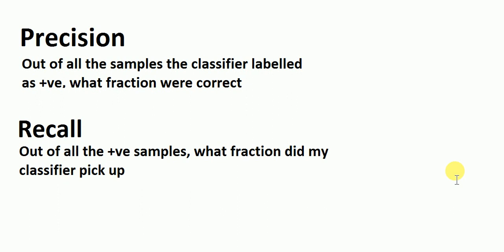Precision is basically out of all the samples that my classifier labeled as a positive sample, what fraction were actually correct. And recall is out of all the positive samples that I had, what fraction did my classifier actually pick up. I'll give you a very simple idea as to how to remember how precision and recall work.